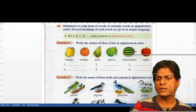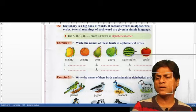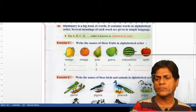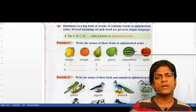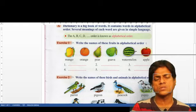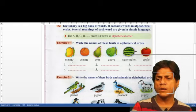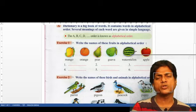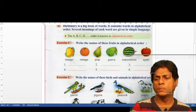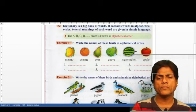I will give you two examples. Do example karke dunga, baqi tumhara homework hai jo ghar mein karna padega. Here you have six words - you have the picture of six fruits and the fruit names are given in English: mango, orange, pear, guava, watermelon, and apple.